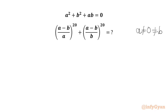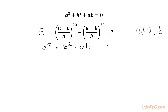Let us get started by considering the required expression equal to E. We will write our equation a² + b² + ab = 0.